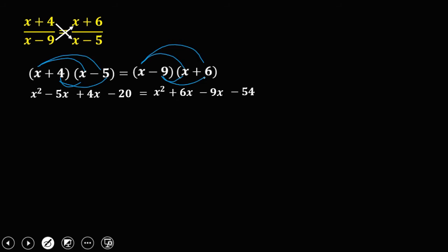Then combine like terms. On the left side, negative 5x and positive 4x combine to give negative x. On the right side, positive 6x and negative 9x combine to give negative 3x, minus 54.